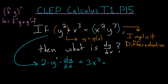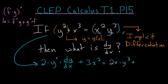We'll take the derivative first of x squared and multiply it by y cubed, giving us 2x to the first times y cubed. Now we'll add the derivative of y cubed, and again we'll use the chain rule here since y is a function of x.